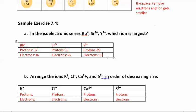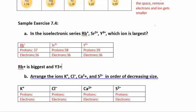So in this series, who is going to be the biggest and who is going to be the smallest? Whoever has the most protons has the strongest pull and will be the smallest, so yttrium should be the smallest. And rubidium, with the fewest protons, should be the biggest.